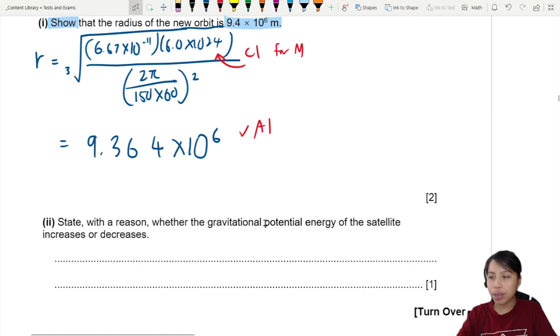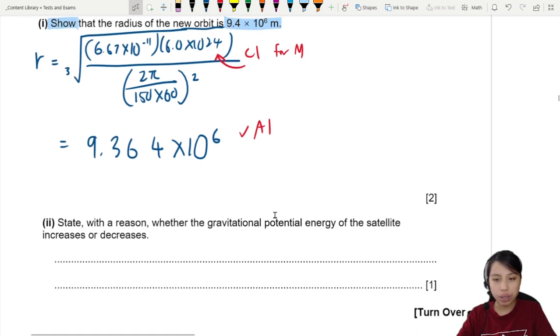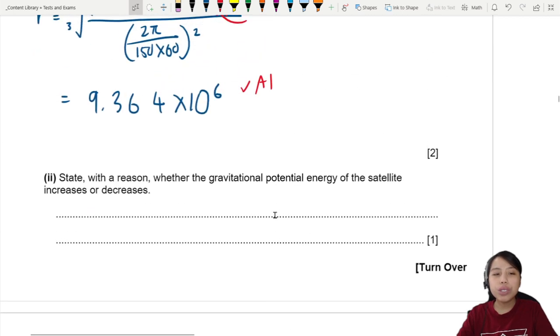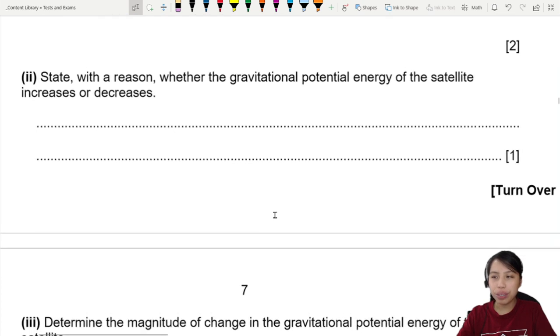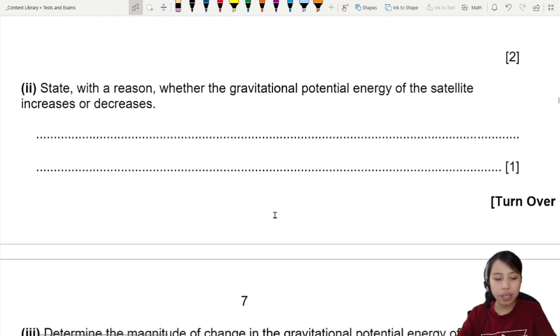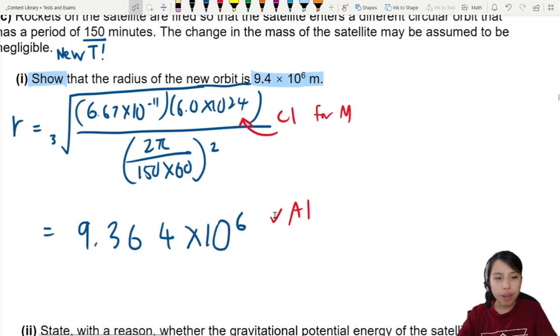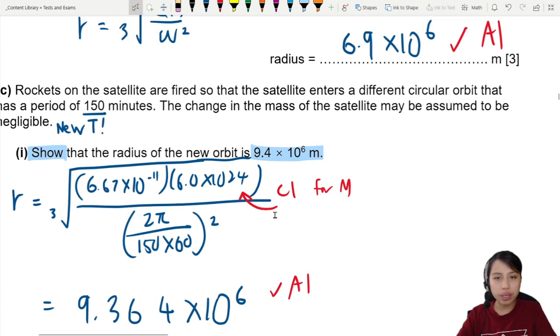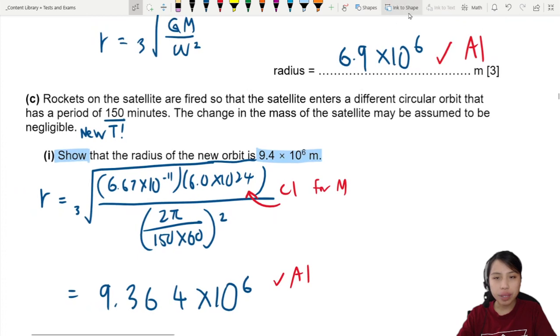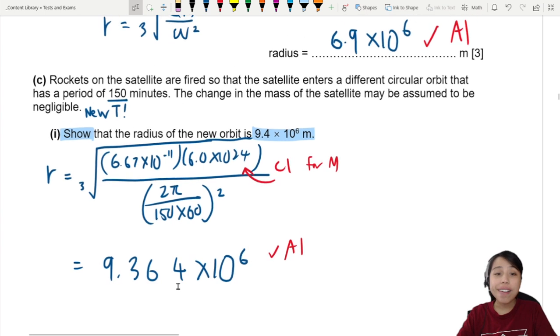State with a reason whether the gravitational potential energy of the satellite increases or decreases. This one is just a little tricky. How do we know if the GPE increase or decrease? Let's check the radius. Radius is 9.4. What was the old radius? 6.9. So from 6.9 you become further away.